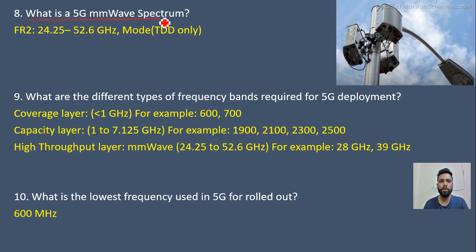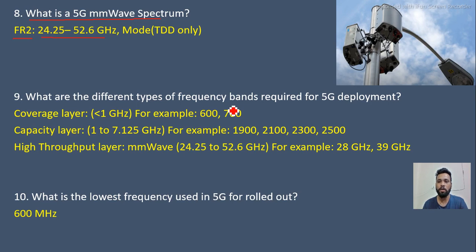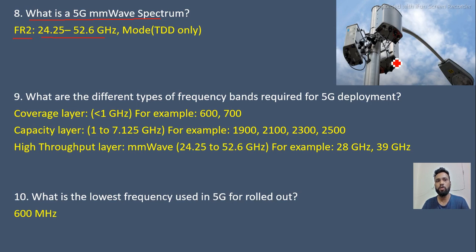Next question: what is the 5G millimeter wave spectrum? It is the higher frequency band spectrum, falling under FR2, from 24.25 to 52.6 GHz. Millimeter wave can provide higher throughput due to higher bandwidth, but coverage is very short — around 100 to 200 meters. Operators deploying it nationwide must place antennas every 100–200 meters, similar to electric poles. It is already deployed in multiple countries, primarily in high-clutter or congested areas.